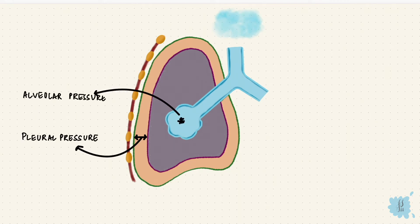Now the difference between these two pressures, that is the pressure across the organ. That's the transmural pressure. Since we're talking about the lungs, it's the transpulmonary pressure.